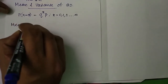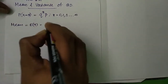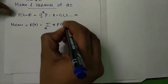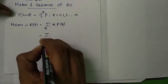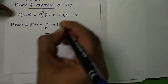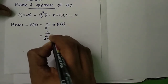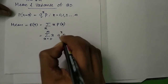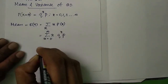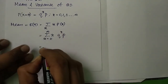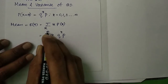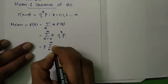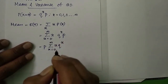The expectation of x is equal to the summation over x from 0 to infinity of x times P(x), which is equal to the summation of x times q raised to x times p. Since p is a constant, it can be taken out, leaving p times the summation from x equal to 0 to infinity of x times q raised to x.